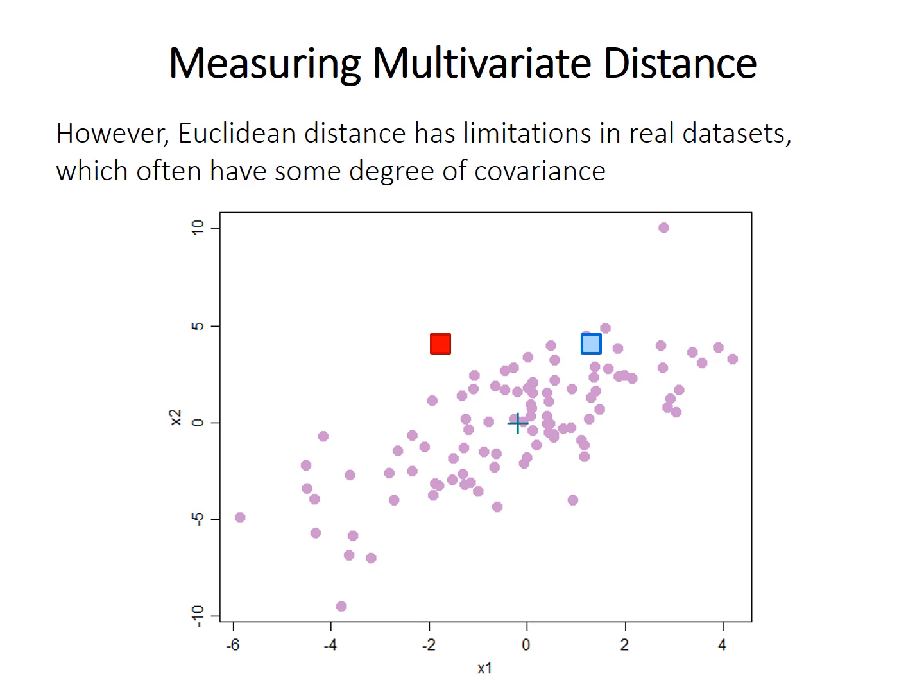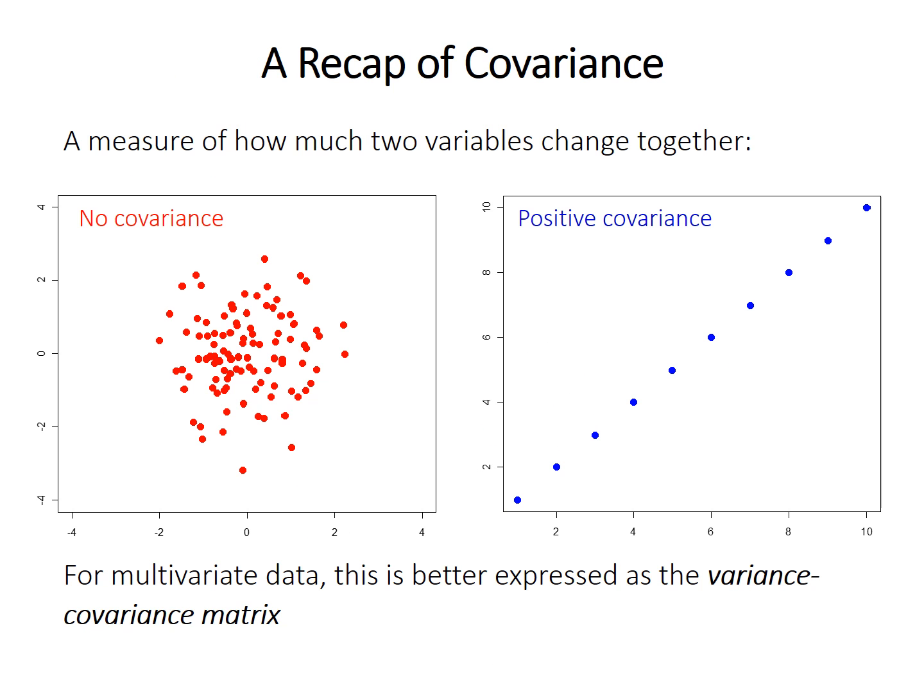I'll also point out that multivariate space doesn't have to have only two axes. We don't have to have only two variables, although all the examples I'll illustrate have two because it's simpler that way. But because we can have more than two, I'll refer to the variables as x1, x2, x3, and so forth, rather than x and y like you'd traditionally label axes on a graph. I mentioned covariance.